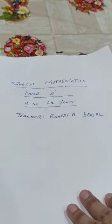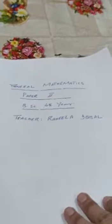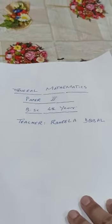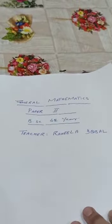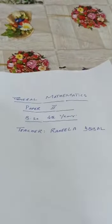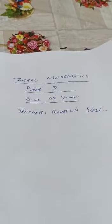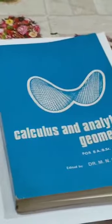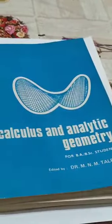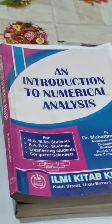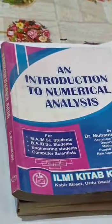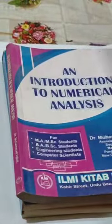Assalamu alaikum dear students. Now we are going to start the General Mathematics Paper Second, BSc Fourth Year. In this section we use three books: first book is Calculus and Analytical Geometry, second book is Introduction to Numerical Analysis, and the third book is Mathematical Method.